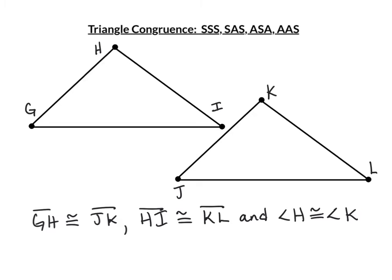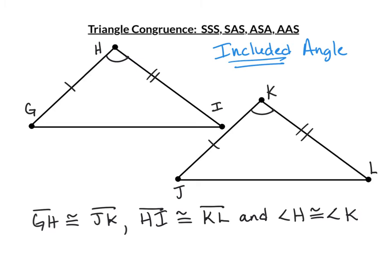The next way to prove triangles congruent is Side-Angle-Side. It's very important that the sides and angles are in the correct order. GH is congruent to JK, HI is congruent to KL, and angle H is congruent to angle K. Notice how H and K are between the two sides — this is a must. The angle must be what is called an included angle, meaning between the two sides. If it's not, then you don't have Side-Angle-Side.